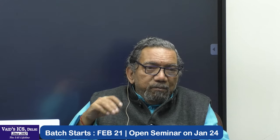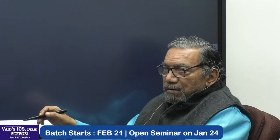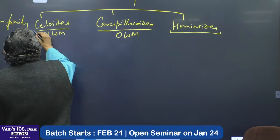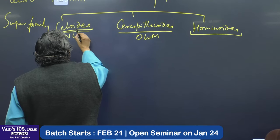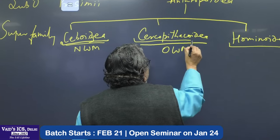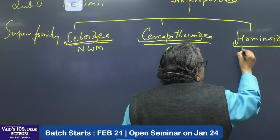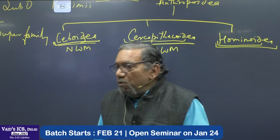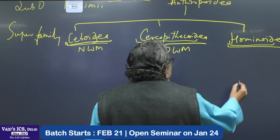Members of a superfamily — superfamily names end with '-oidea': Shiboidia, Sarcopythicoidea, Hominoidea. And members are called '-oides': Shiboides, Sarcopythicoides, and Hominoides.